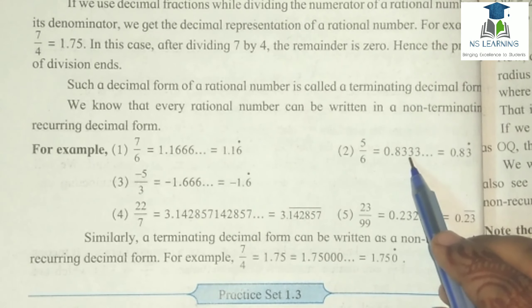Similarly, a terminating decimal form can be written as a non-terminating recurring decimal form. For example, 7 by 4 equals 1.75, which equals 1.750000..., where 0 is repeating. So we can write it in non-terminating decimal form by using repeating 0s.